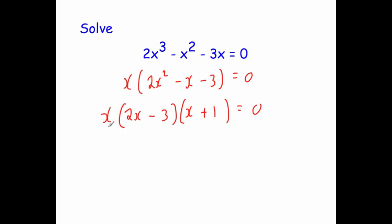First of all, x could be 0 here. Because remember, if x is 0, you get 0 times something times something equals 0. So our first solution is x = 0.